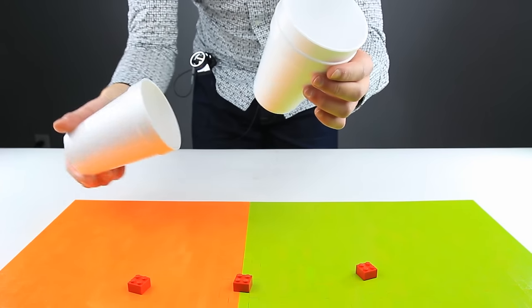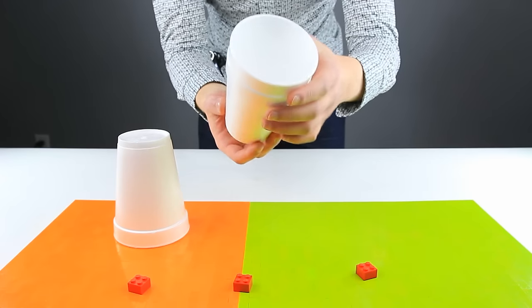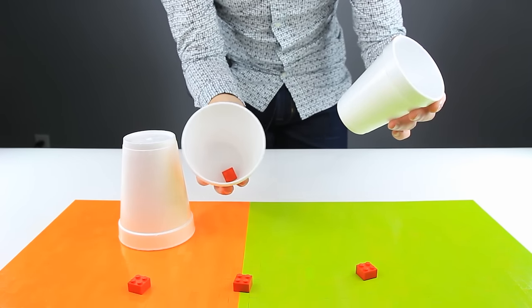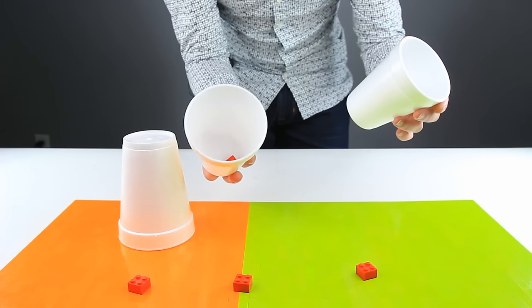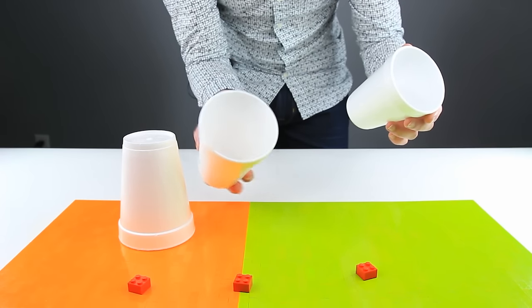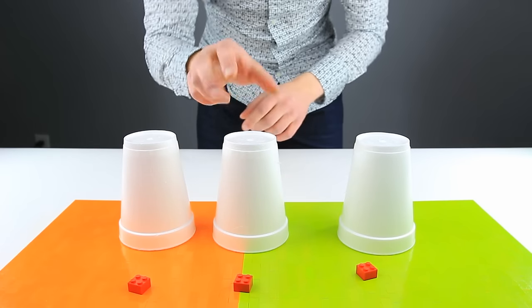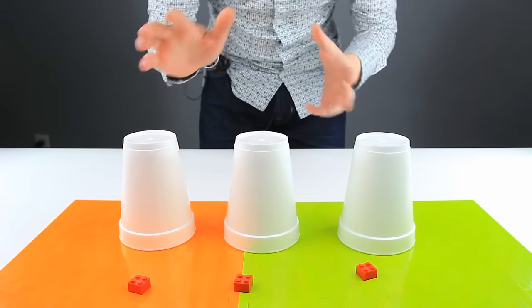Then we take the bottom cup and flip it upside down so the audience can't see. This one actually had nothing in it. The middle one has one brick in it. And when we pour it over, we're going to do it quickly so they don't hear. But I'm going to do it extra quickly so it's really loud. That was pretty obvious.